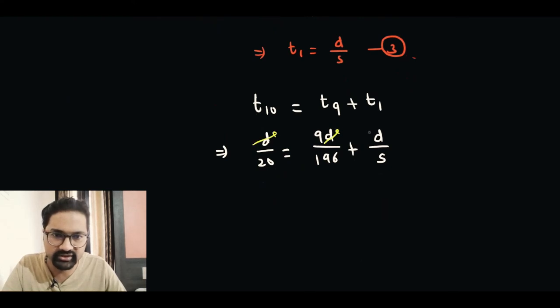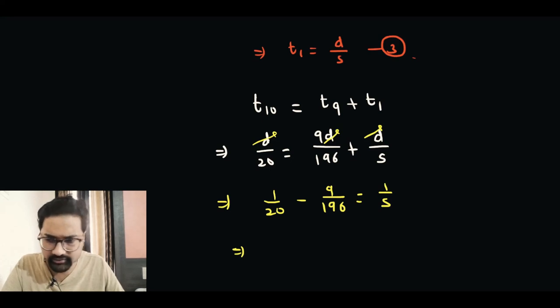So D, D, and D is cancelled. Let's rearrange this a little bit, so 1 over 20 minus 9 over 196 is 1 over S.